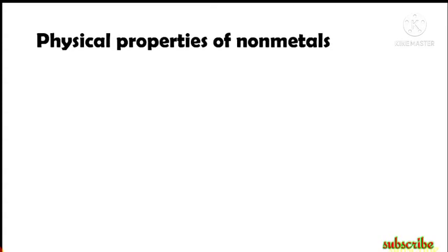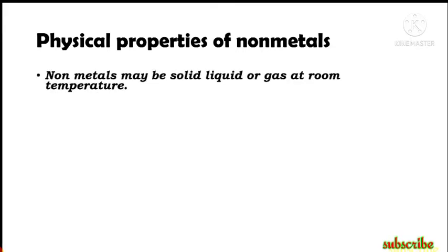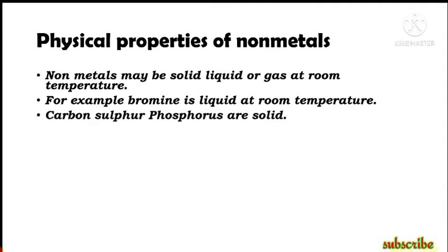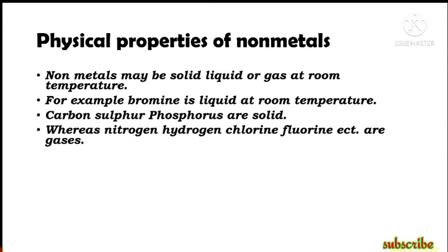Now, the physical properties of nonmetals. First of all, nonmetals may be solid, liquid, or gas at room temperature. For example, bromine is liquid at room temperature; carbon, sulfur, and phosphorus are solid; whereas nitrogen, hydrogen, chlorine, and fluorine are gases. In contrast, metals are generally all solid — only mercury and gallium with low melting points are exceptions. So nonmetals may be solid, liquid, or gas.